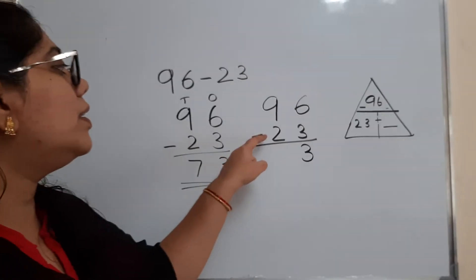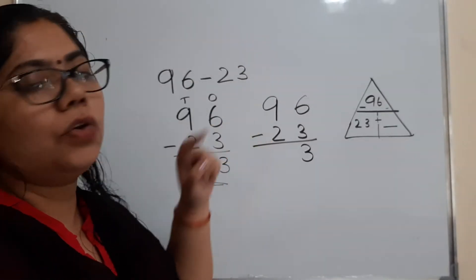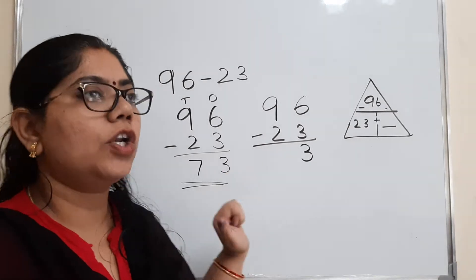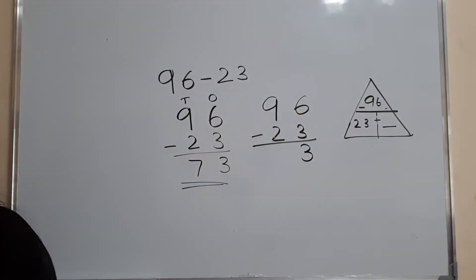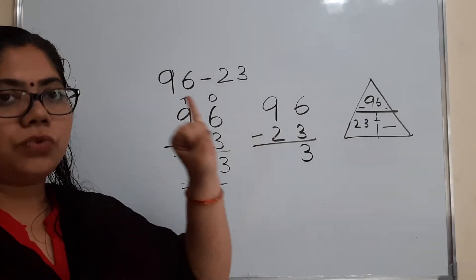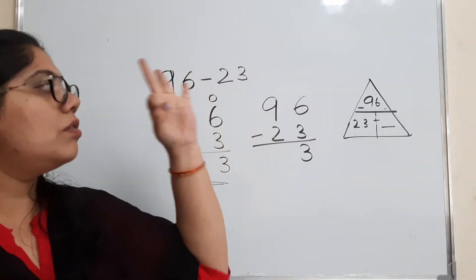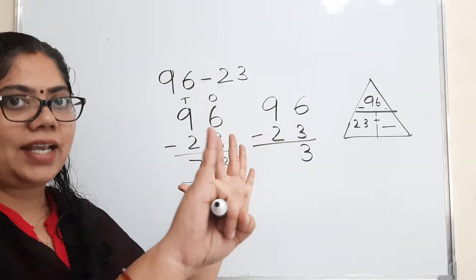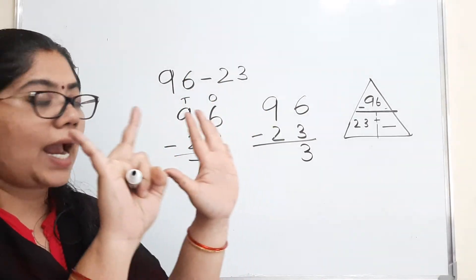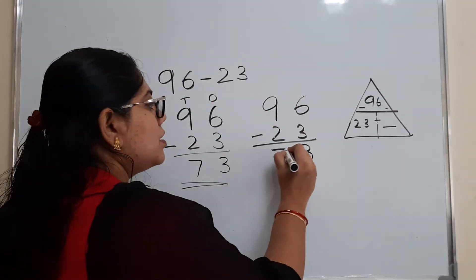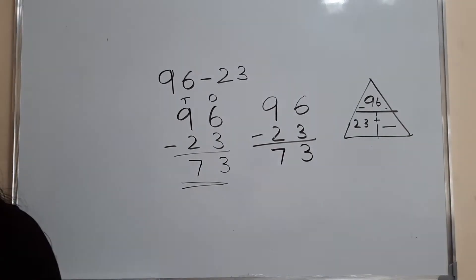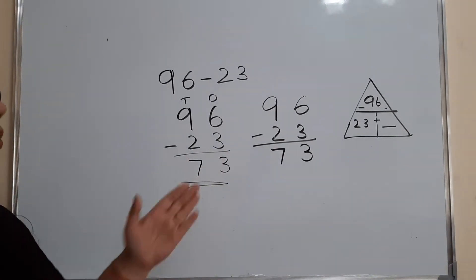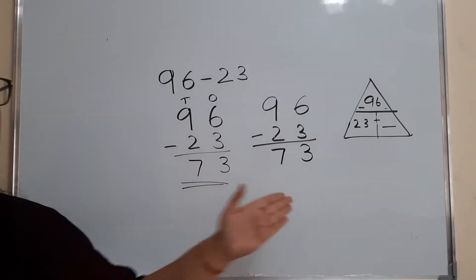Now, with the 2, if you add something, you will get 9. What you will add to get 9? After 2, what will come? 3, 4, 5, 6, 7, 8, 9. So when you add 7, you will get 9. And see, so you got the same answer as this.